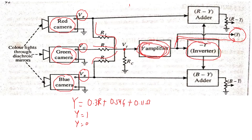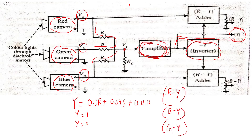For color information, there are three possible color difference signals because there are three colors. These are: R minus Y (red minus luminance), B minus Y (blue minus luminance), and G minus Y (green minus luminance). These are the three difference signals obtainable from the three primary color inputs.